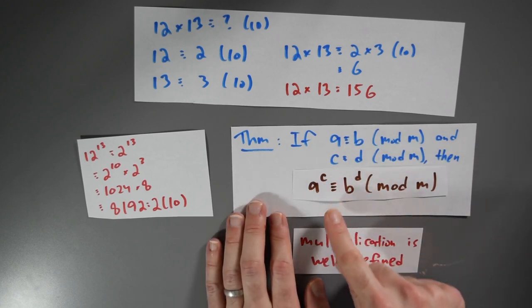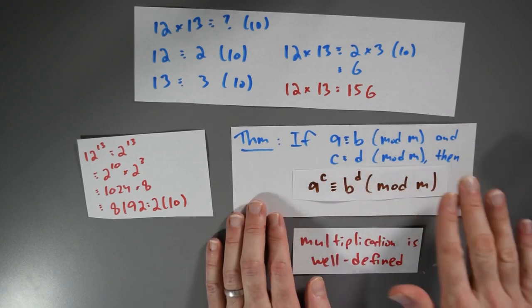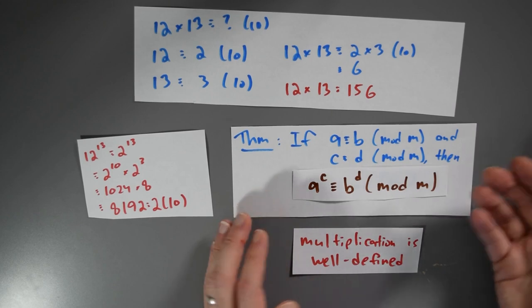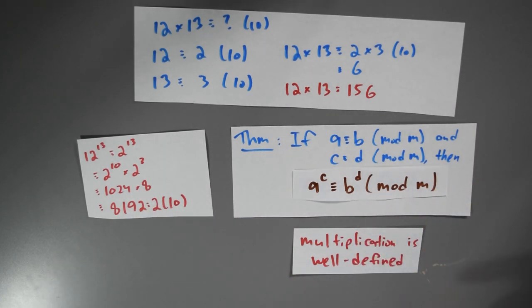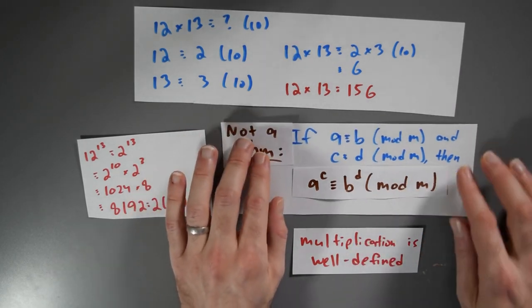We want to conclude that a to the c is congruent to b to the d mod m. This is the claim that exponentiation is a well defined operation. But this claim is not true. It's not a theorem.